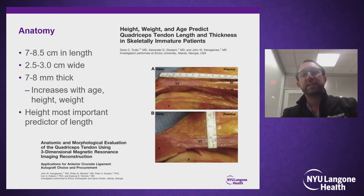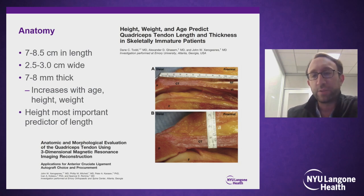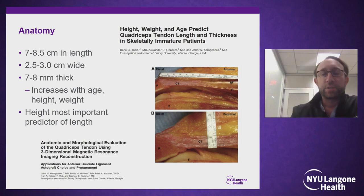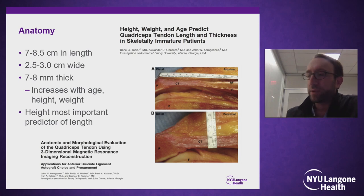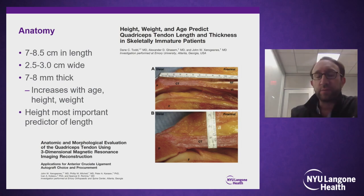In terms of the anatomy of the quadriceps tendon, it's got two good factors: it's long and it's thick — about seven to eight millimeters thick at its most robust portion, roughly two and a half to three centimeters above the patella. It is very wide, ranging about two and a half to three centimeters wide at the insertion site onto the patella. Just like hamstrings and BTB, size increases with age, height, and weight. Height has been shown to be the most important predictor of quadriceps tendon length.